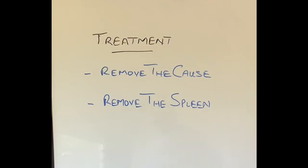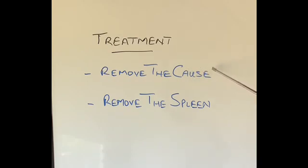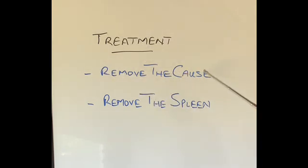So what is the treatment for hypersplenism? The treatment depends on what is causing it. If there is a condition outside the spleen which is causing it — for example, cancer, infection, or liver disease — then if that is controlled, the hypersplenism will improve. So if you remove the cause in those patients, especially patients with secondary hypersplenism, then the hypersplenism will improve.